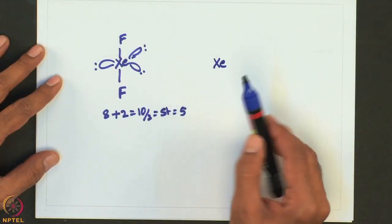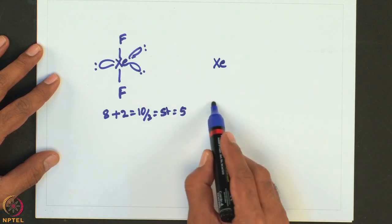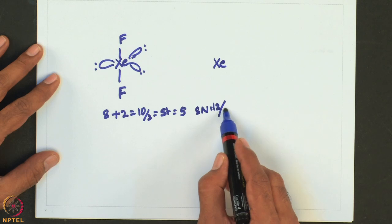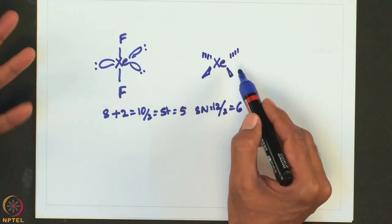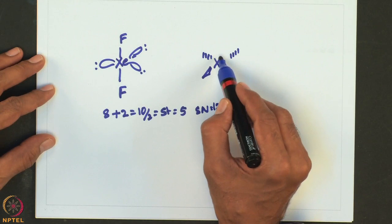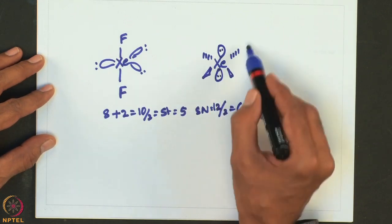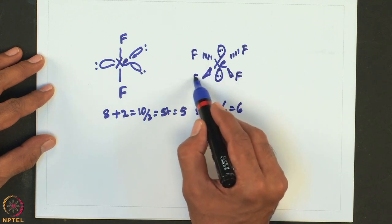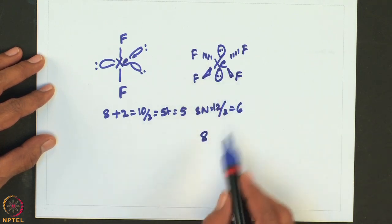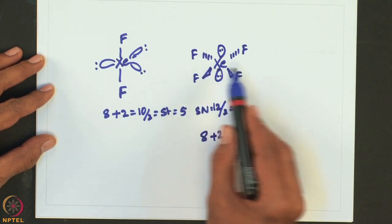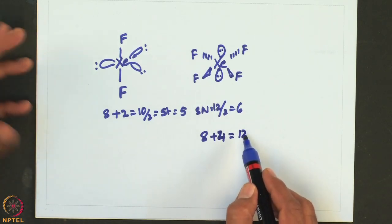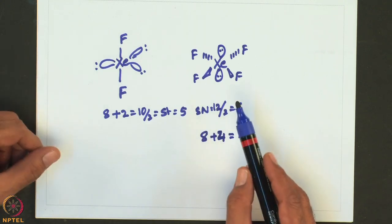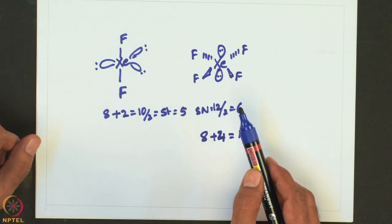Similarly, for XeF4: 8 + 4 = 12 electrons; steric number = 12/2 = 6, with 4 bonding pairs and 2 lone pairs. The structure is octahedral and the shape is square planar. Here 8 electrons are from xenon plus 4 electrons from 4 fluorine atoms gives 12; steric number is 6, giving an octahedral geometry and a planar shape.